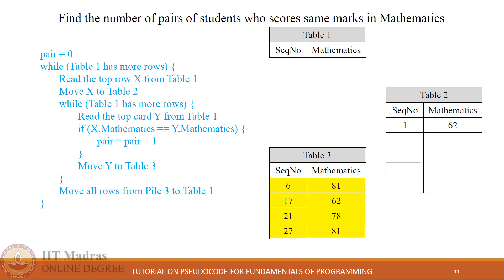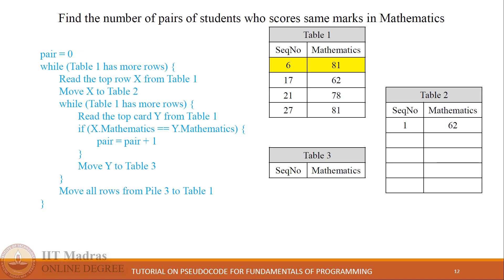At this point the inner iteration stops and all rows from table 3 are moved back to table 1 to restart the outer iteration. The same process continues with the updated value of variable X, which is the highlighted row from table 1. The row is moved to table 2 and we read the new top row as Y. This entire process continues while table 1 has more rows.